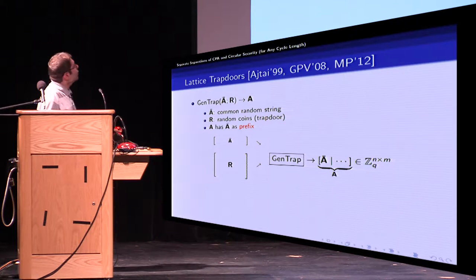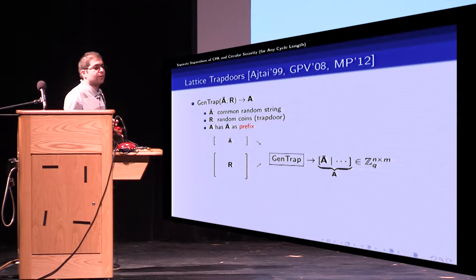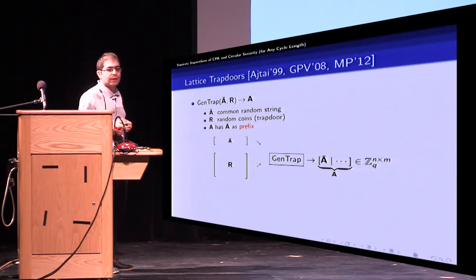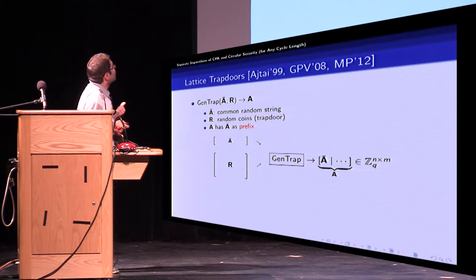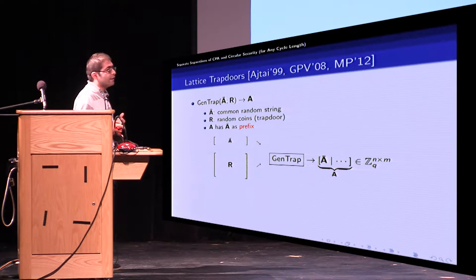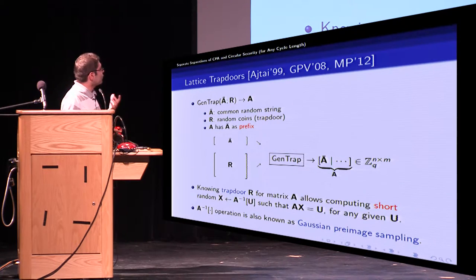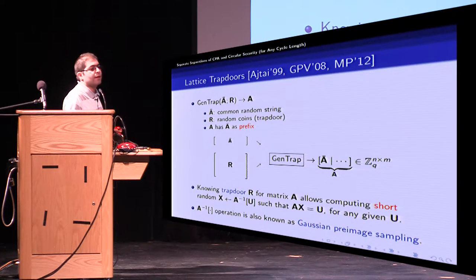Okay, let's have a quick review on lattice trapdoors. GenTrap is a randomized algorithm which uses A bar as common random string and R as random coins which also we call trapdoor to generate matrix A where A has A bar as its prefix.